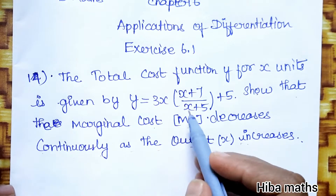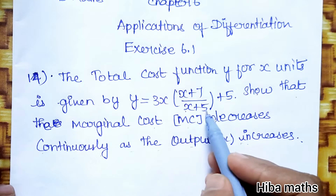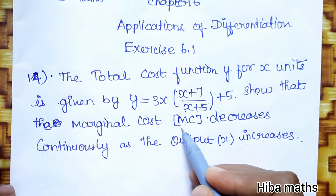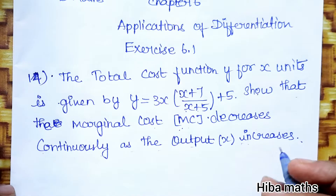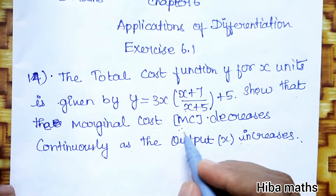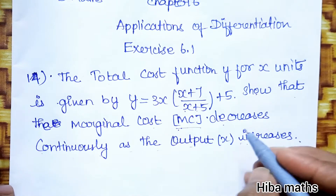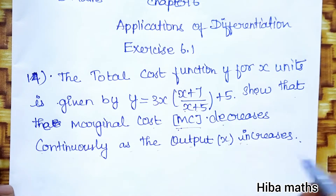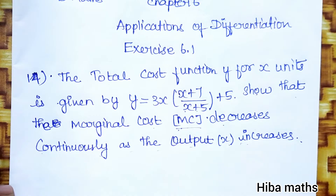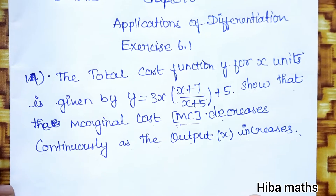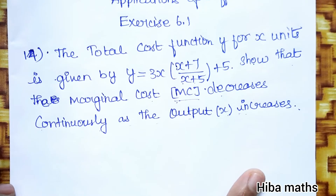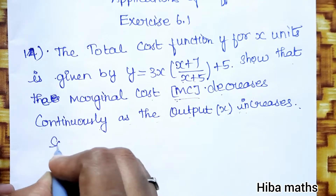Now y is given, and we will find the marginal cost. Marginal cost is found by differentiation. We will prove that MC decreases as x increases. Understand the concept of the solution.